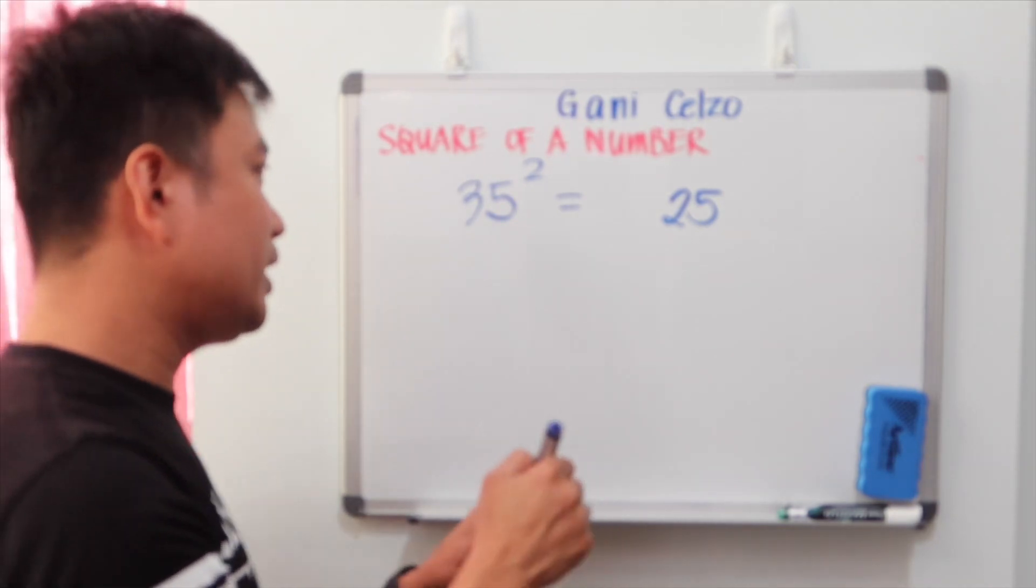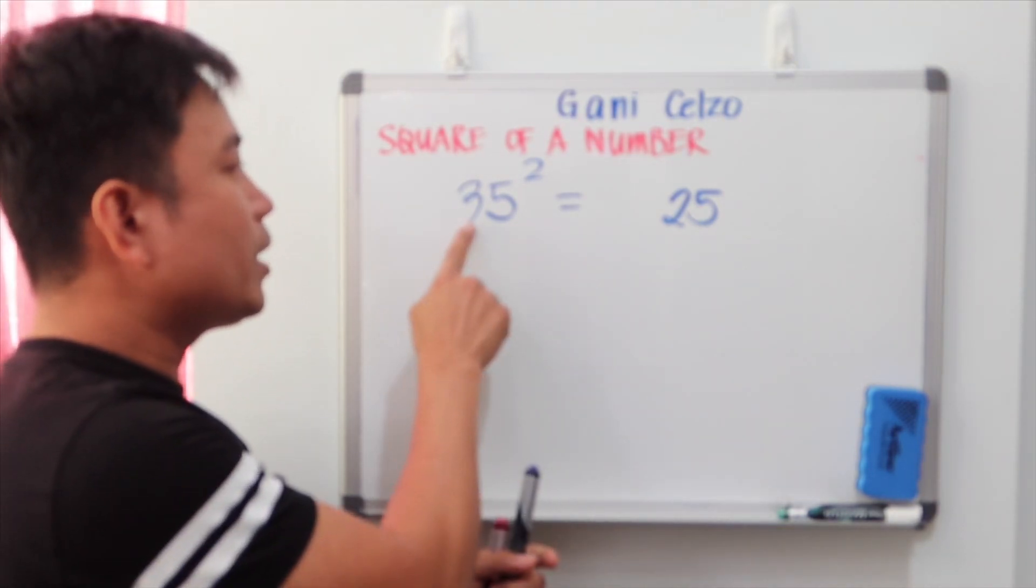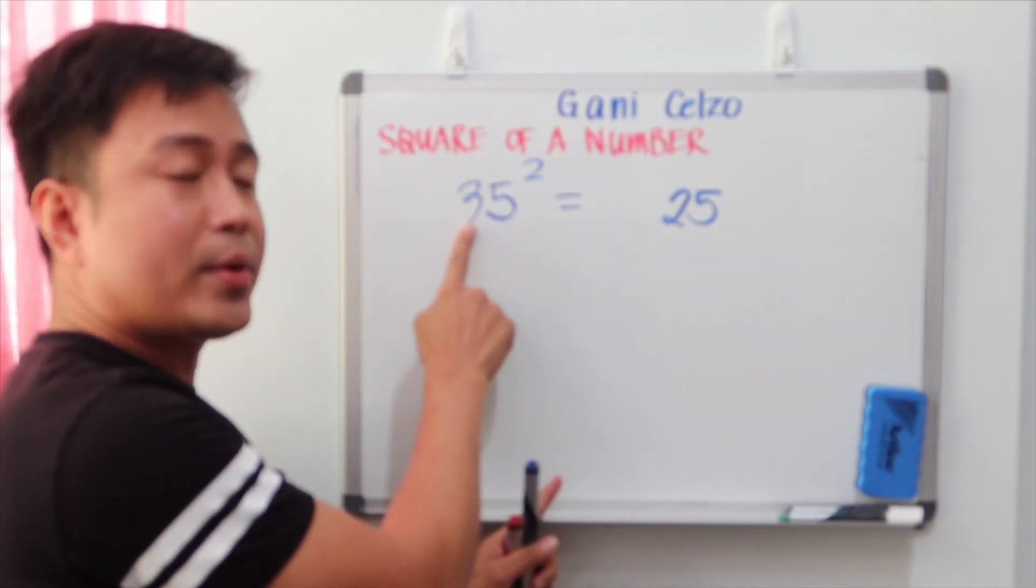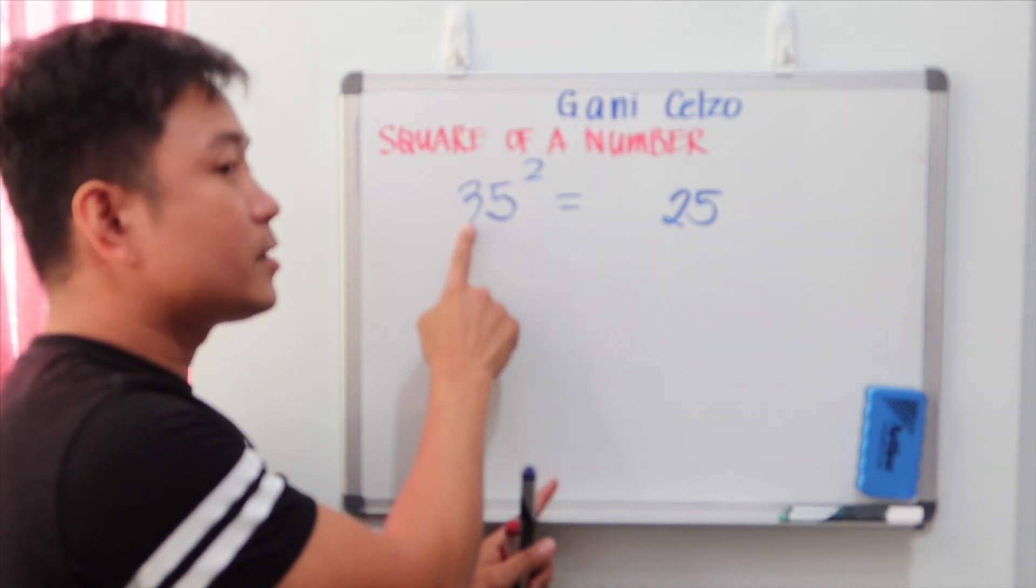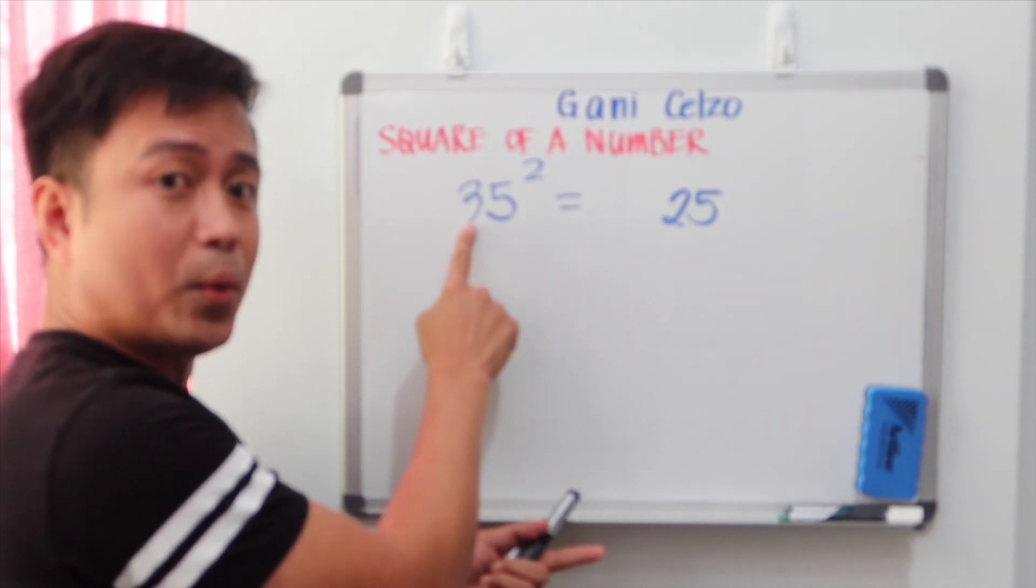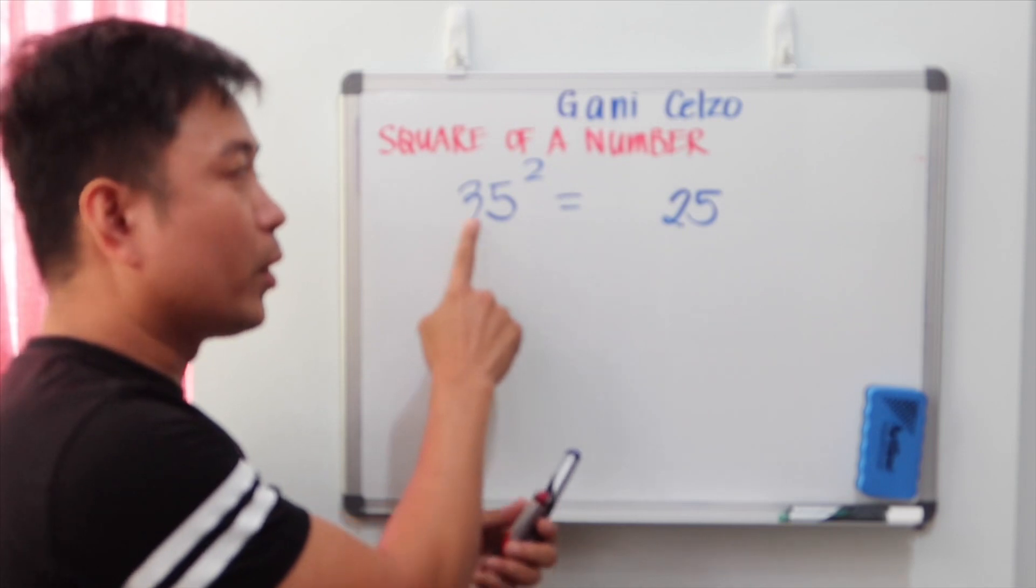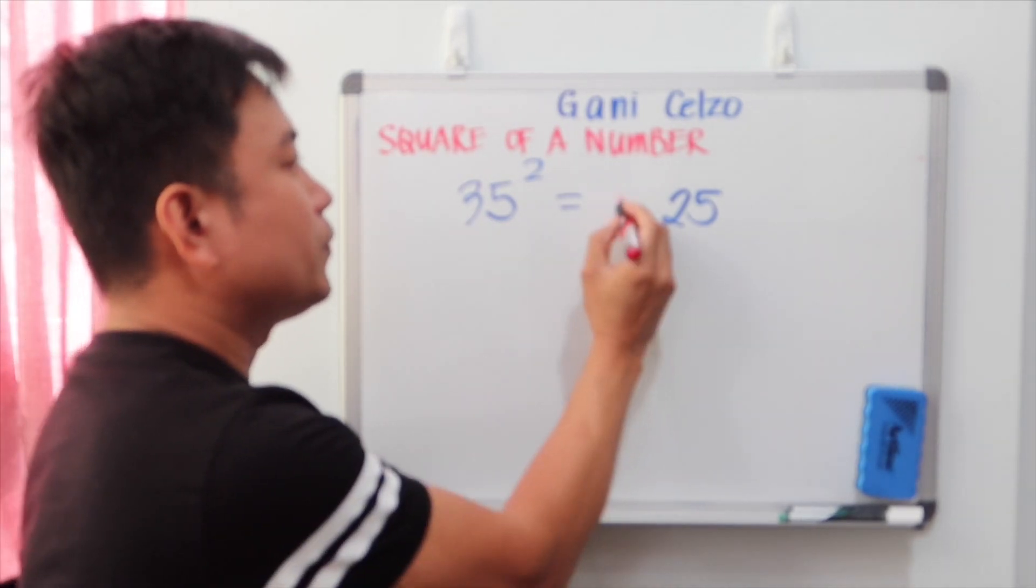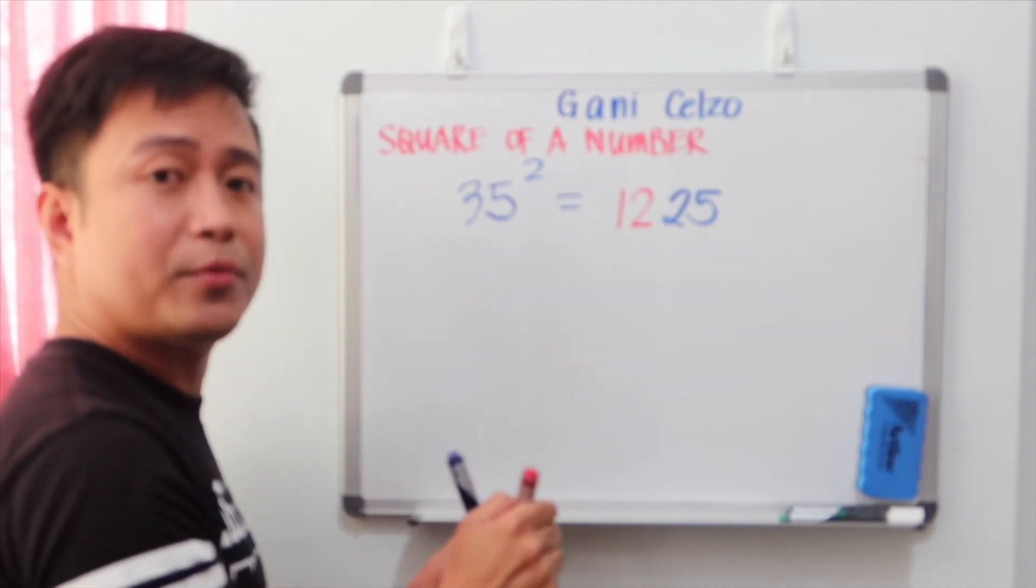And to find the first few digits, instead of doing 3 squared or 3 times 3, you need to do 3 times the next digit, which is 4. So you need to do 3 times 4, and that gives you 12. So that is 1225.